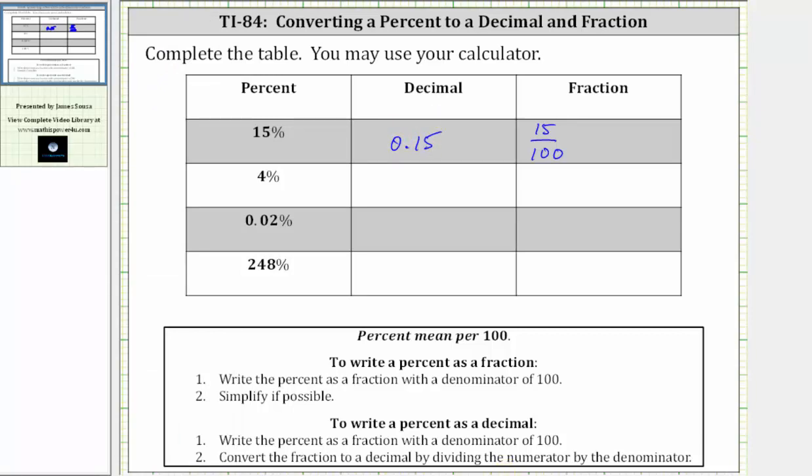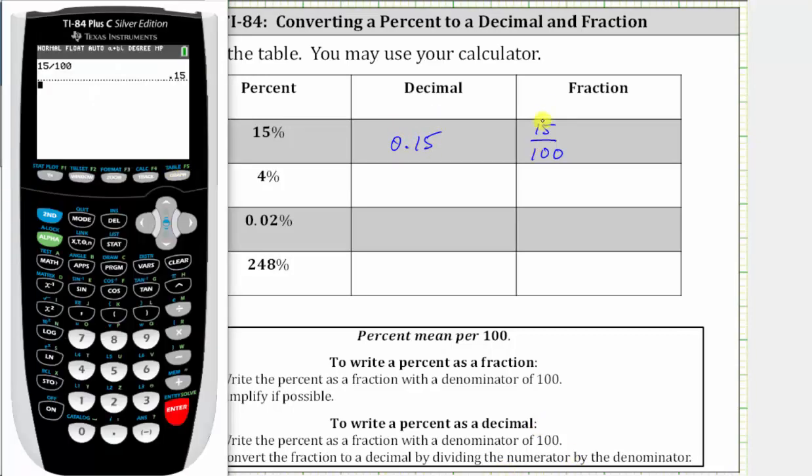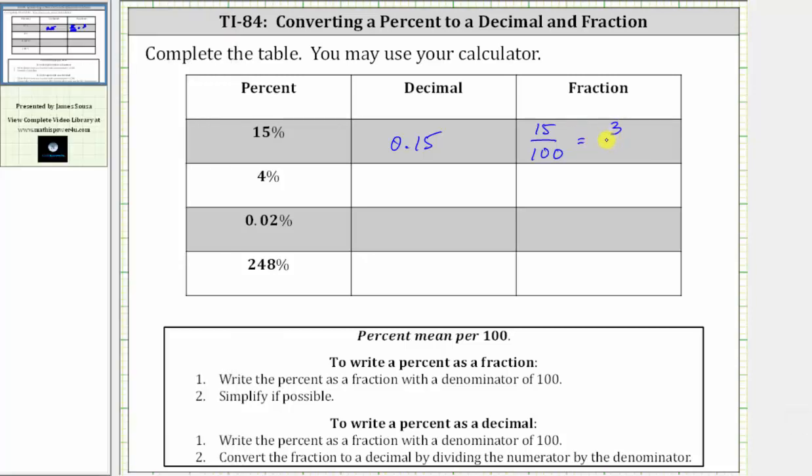And now to find the simplified fraction for 15%, we press math, enter, enter. And notice how the simplified fraction for 15% is 3 20ths. If we get the same fraction we entered, that means the fraction does not simplify.